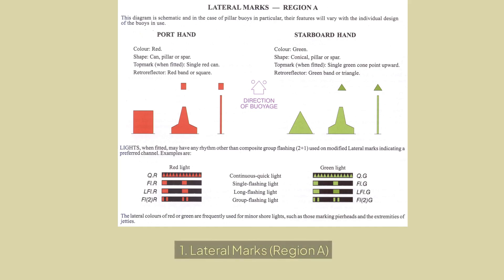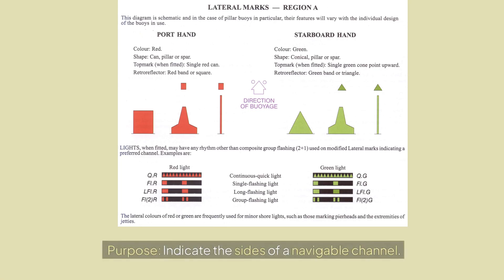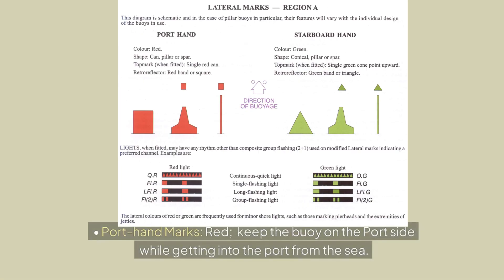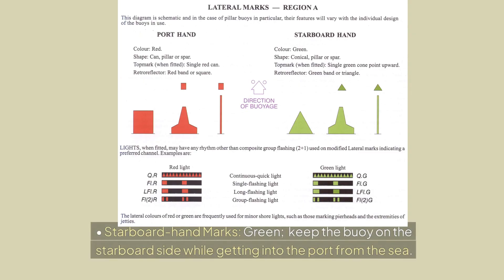Lateral marks — Region A. Purpose: indicate the sides of a navigable channel. Rules: port hand marks are red — keep the buoy on the port side while entering the port from the sea. Starboard hand marks are green — keep the buoy on the starboard side while entering the port from the sea.